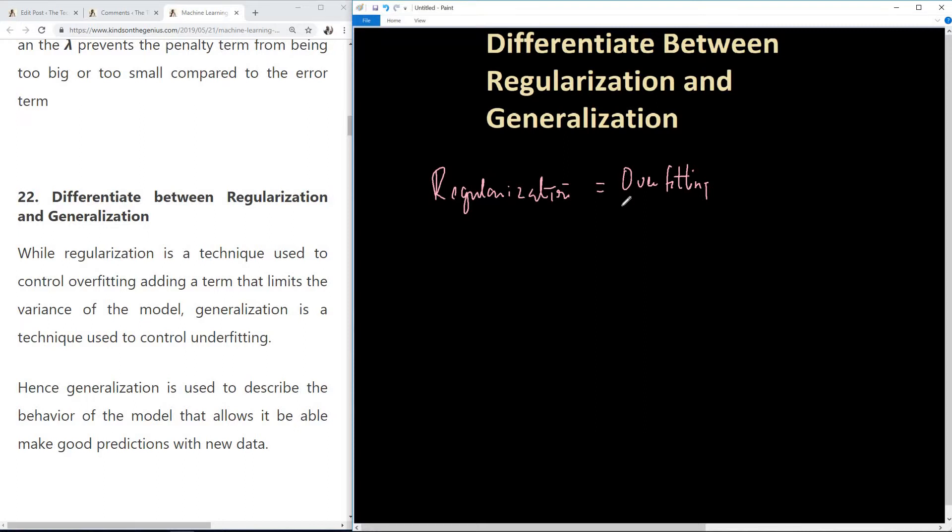Generalization is the ability of a model to be able to recognize and be able to model new data set that is different from training data set that was used to train the model. So generalization is used to describe the behavior of a model that allows it to be able to make good predictions with new data.